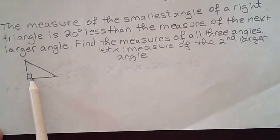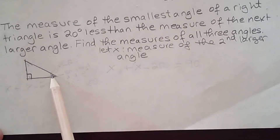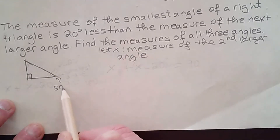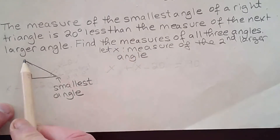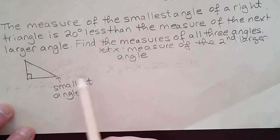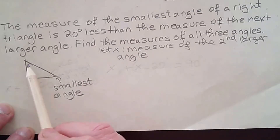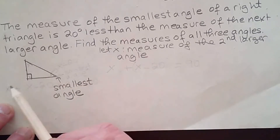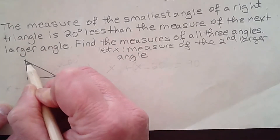They told me that the smallest angle is 20 degrees less than the next larger angle. So this is my smallest angle, this would be the second larger angle, and this would be the largest angle. So I want my variable to represent the second larger angle. If I let X be the measure of the second larger angle, this one would be X.